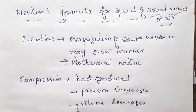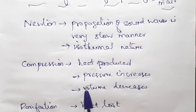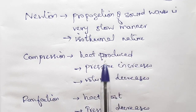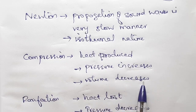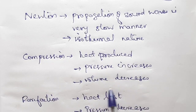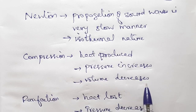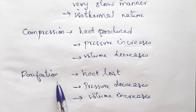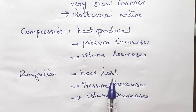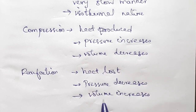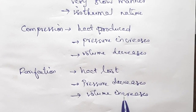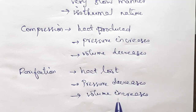During compression, the longitudinal waves form compressions and rarefactions. During compression, heat is produced. At that time, pressure increases and volume decreases. By that, the temperature is maintained constant. Similarly, during rarefaction, heat is lost. At that time, pressure decreases and volume increases, and again the temperature is maintained constant. So over a period of time, the temperature of the medium remains constant — we can say it is isothermal in nature.